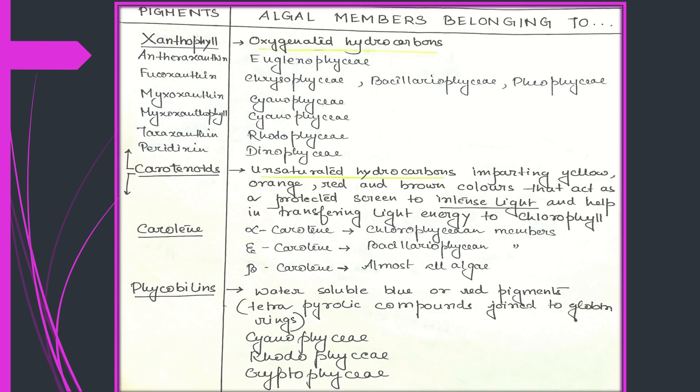Chlorophyll is the most important among the studied pigments, so I had kept it separate. Apart from chlorophyll, xanthophylls, carotenoids, and phycobilins are also important pigments found in various groups of algae. First, we'll come to xanthophylls.